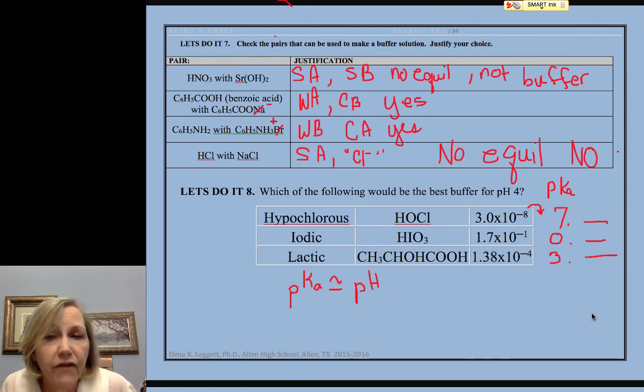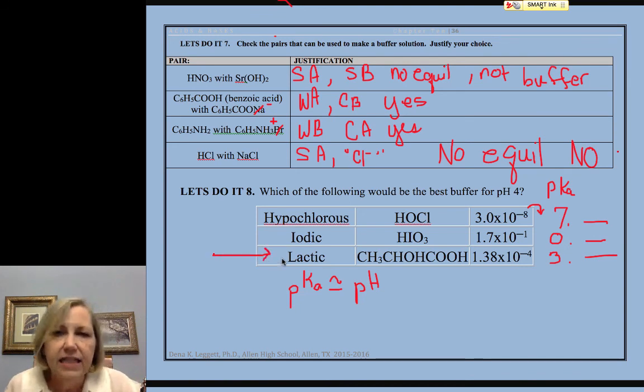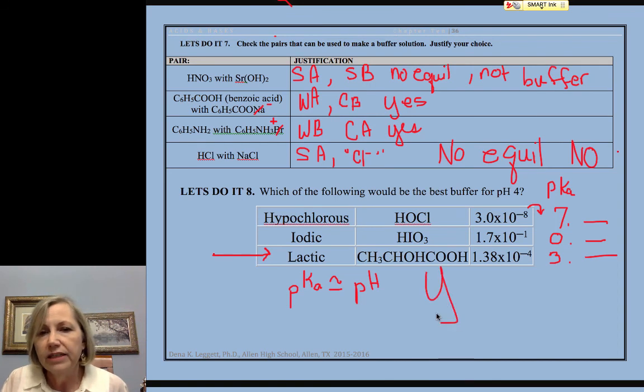because clearly the closest one to four is our lactic acid system. This is iodic acid, lactic acid, hypochlorous acid. So I would start with that, and in our next video, you would see how we take a buffer like that, and what combination, what masses do we use, what relative amounts of the acid and its conjugate are used to achieve that desired pH. So until then, this is always loving my kiddos.